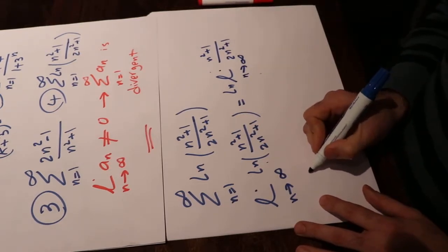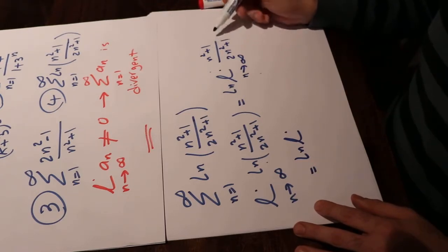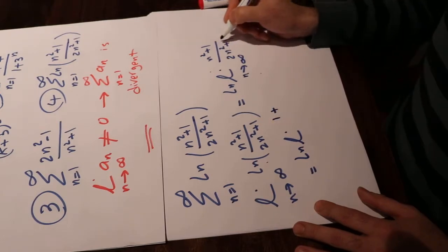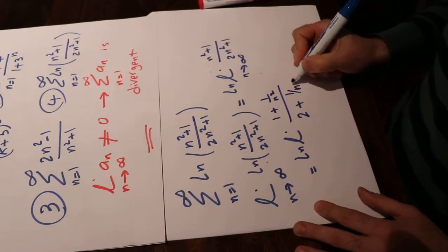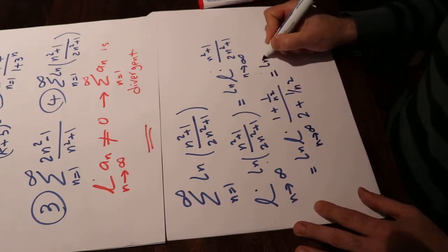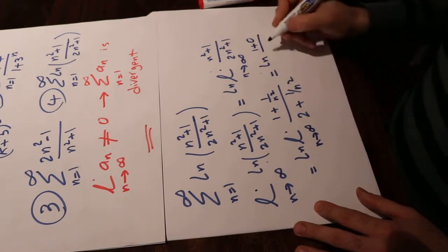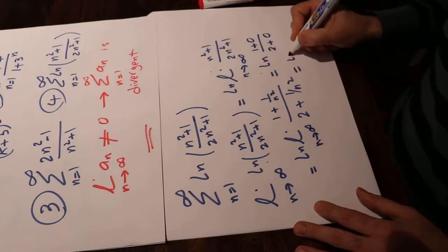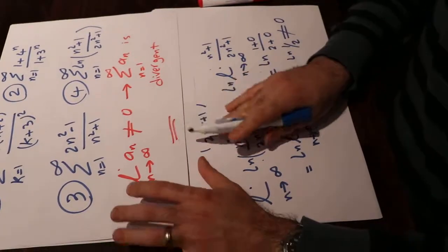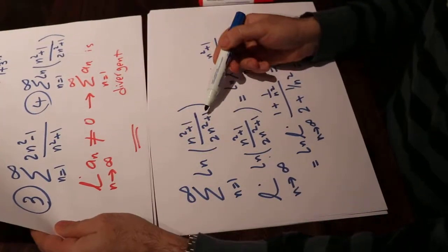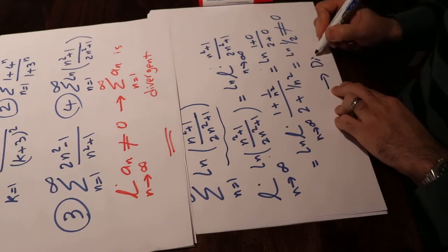Dividing numerator and denominator by n², the limit of (n²+1)/(2n²+1) becomes (1 + 1/n²)/(2 + 1/n²). As n goes to infinity, this equals 1/2. So the full limit is ln(1/2), which is not equal to zero. According to the divergence test, when the limit of aₙ is not equal to zero, we can conclude that sigma aₙ is divergent. Therefore this series is divergent.